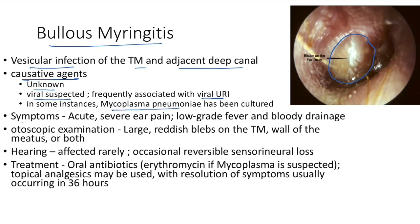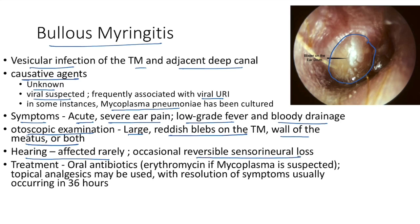Symptoms of bullous myringitis include acute severe ear pain, low-grade fever, and bloody drainage. On otoscopic examination there are large reddish blebs on the tympanic membrane, wall of the meatus, or both. Hearing is rarely affected, though occasionally there may be reversible sensorineural hearing loss. Treatment: oral antibiotics — erythromycin is the treatment of choice if Mycoplasma is suspected; topical analgesics may be used.